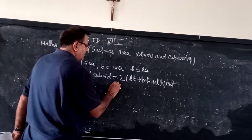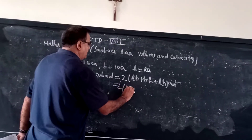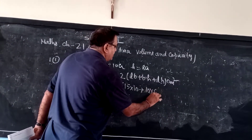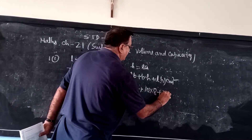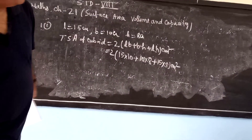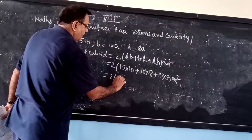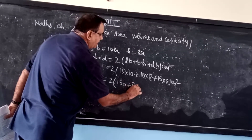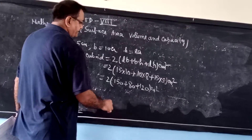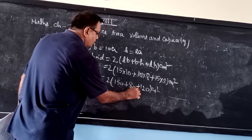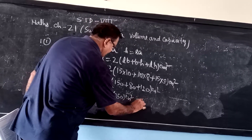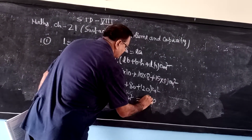Since centimeters are given, the unit will be centimeter squared. So twice of: length is 15 into breadth is 10, plus breadth is 10 into height is 8, plus length is 15 into height is 8 centimeters. This becomes twice of 150 plus 80 plus 120 centimeters squared. Adding: 150 plus 80 is 230, plus 120 is 350, so twice 350 equals 700 centimeters squared.